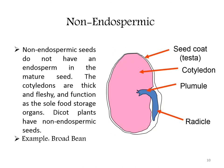The next type is non-endospermic seeds. They do not have an endosperm in the mature seed. The cotyledons are thick and fleshy and function as the sole food storage organ. Dicot plants have non-endospermic seeds. An example is the broad bean.